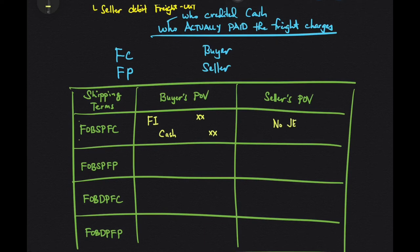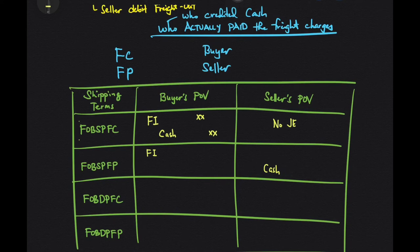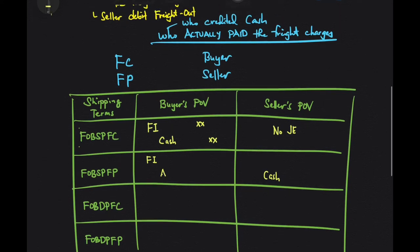Next, FOB shipping point freight prepaid. For FOB shipping point, under the buyer's books, debit freight in. Freight prepaid means the seller pays the transportation, so the seller credits cash. Since it was established that the buyer should be the one to pay the transportation under FOB shipping point, the buyer will owe the seller — so the buyer credits accounts payable. In turn, the seller increases accounts receivable from the buyer.